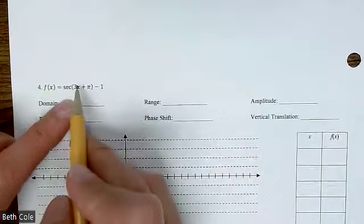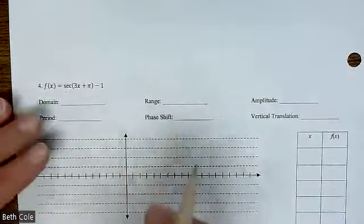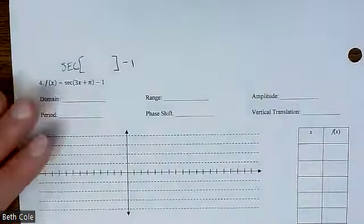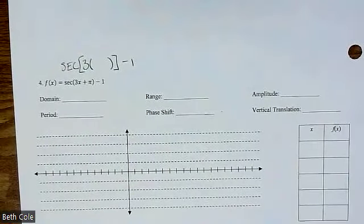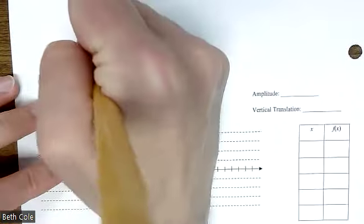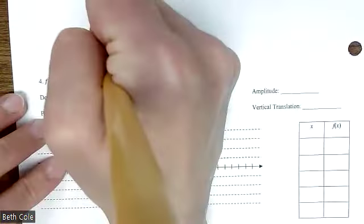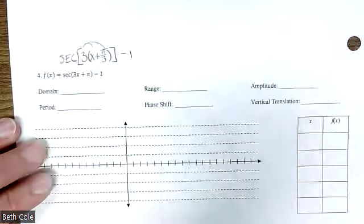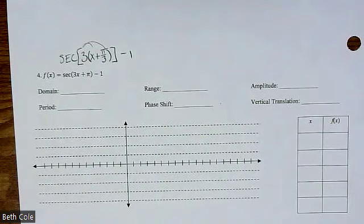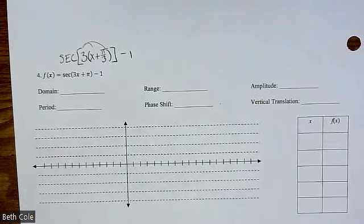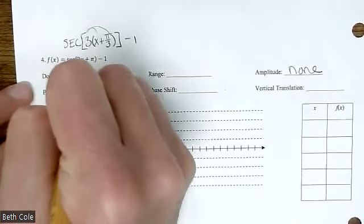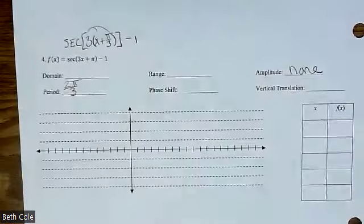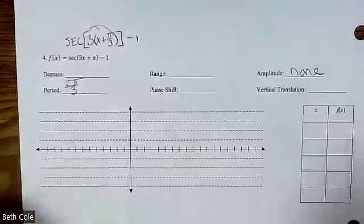Last one. You're going to need to factor the three out of this to be able to see what the phase shift is. I'll write above: secant, leave a gap, minus one. We're going to factor out a three — GCF. What's left once you factor out a three? X plus — it will be a fraction — pi over three. You can check: distribute that three back through and you'll get what you started with. Amplitude is none. What's the period? Two pi over three, which doesn't reduce — so just two pi over three.